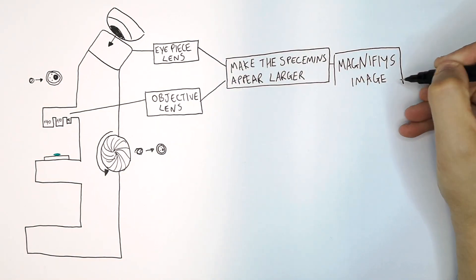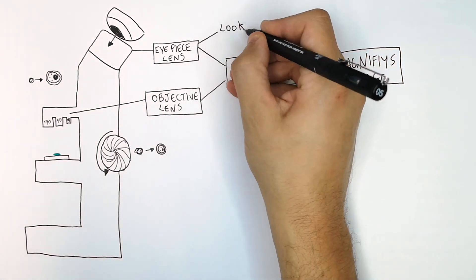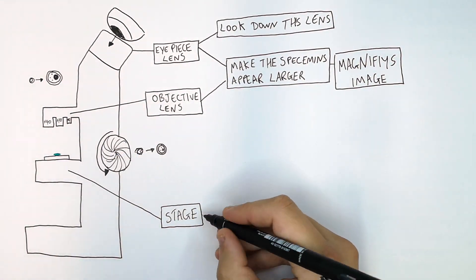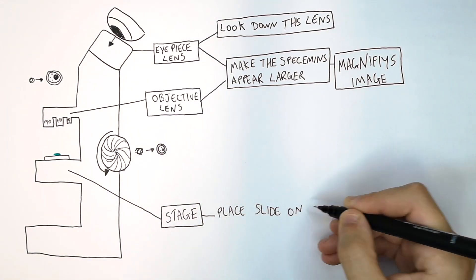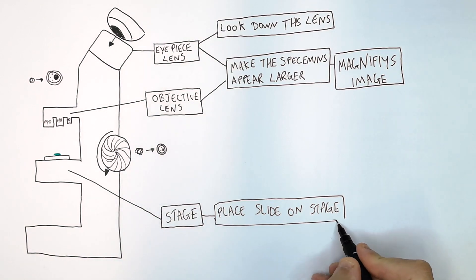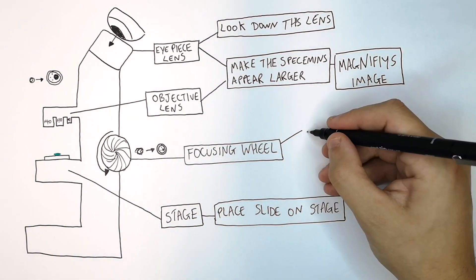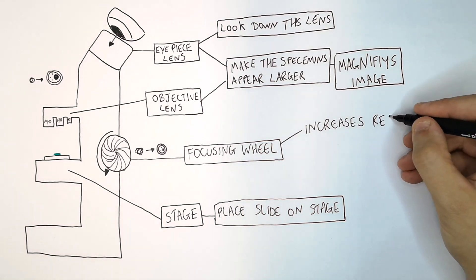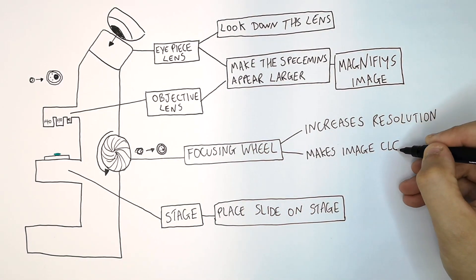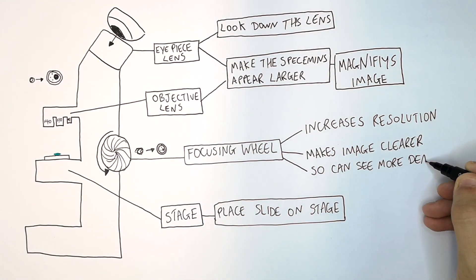The eyepiece lens is what you look down. The stage is where you place the slide. The focusing wheel is used to increase the resolution — increasing resolution makes the image clearer, meaning you can see more detail.